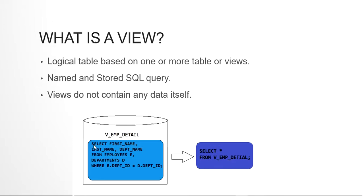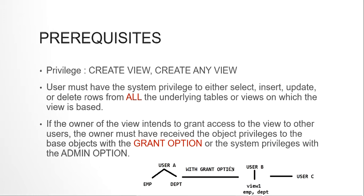To understand it more, say I have a SELECT statement like SELECT first_name, last_name, and department_name FROM the employees table and departments table, joined through the department_ID column. If I create a view on this SQL statement with the name v_EMP_detail and store it into the database, next time I want the output of this query I can simply write SELECT * FROM v_EMP_detail and it will give me the exact output the original SELECT statement would have given.